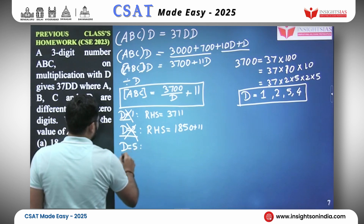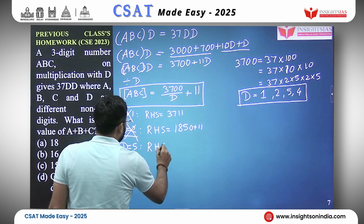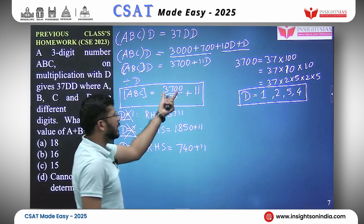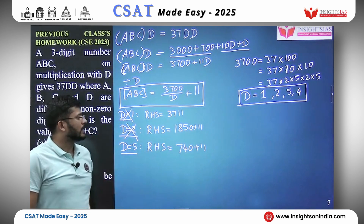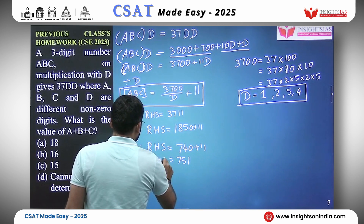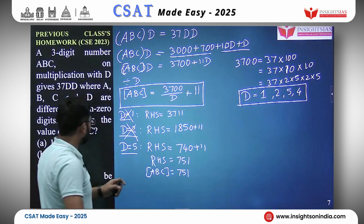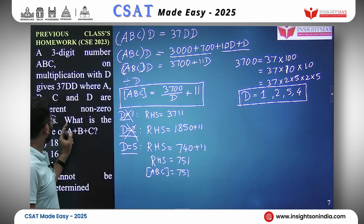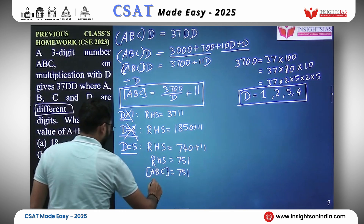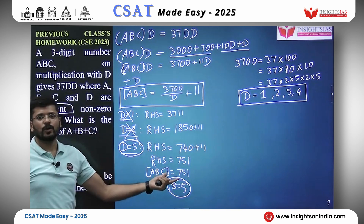Trying D equals 5: 3700 divided by 5 is 740, plus 11 is 751. So ABC would be 751. However, A is 7, B is 5, and we assumed D is also 5 — but B and D cannot both be 5 since all digits must be different. So this does not give us our answer either.